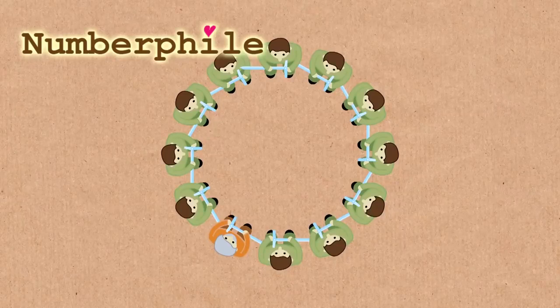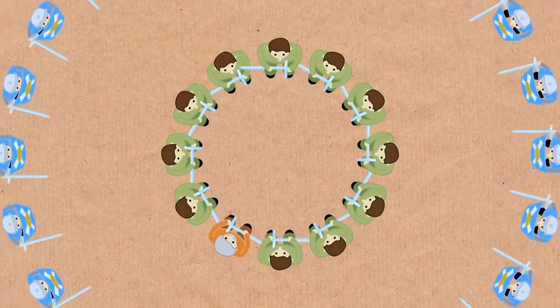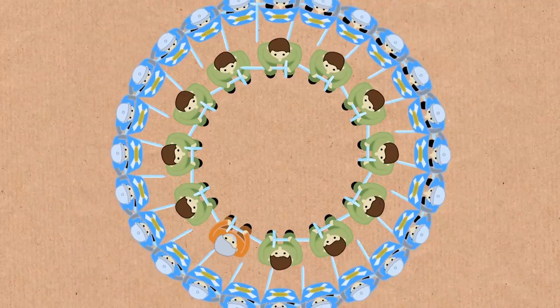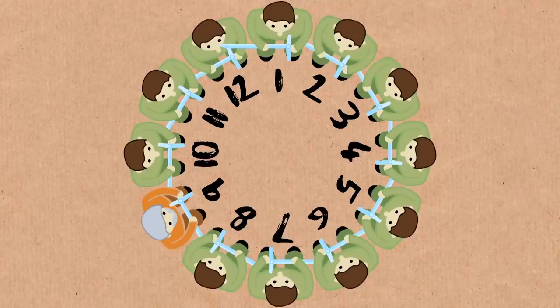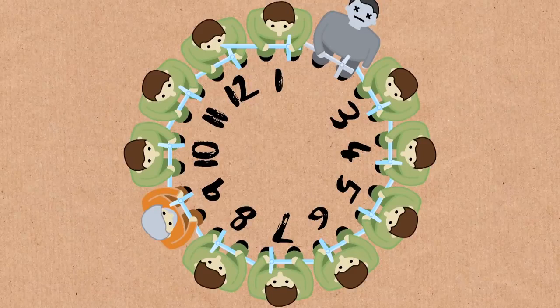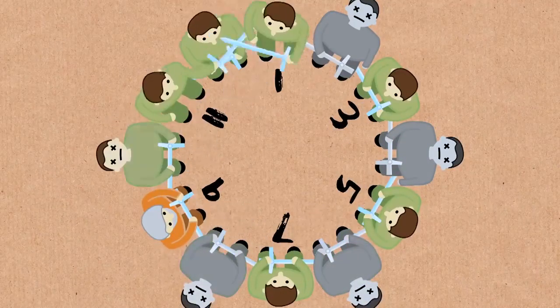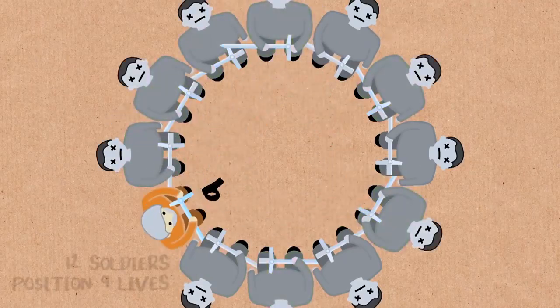So it's called the Josephus Problem. It's based on something from history. There was a group of Jewish soldiers who were surrounded by the Roman army and they didn't want to get captured, so they decided to come up with a system to avoid getting captured or suicide. So they'd sit in a circle and the first man would kill the guy to the left of him.